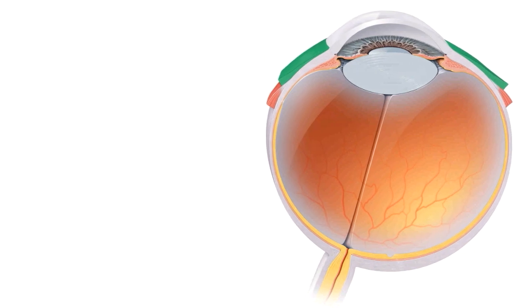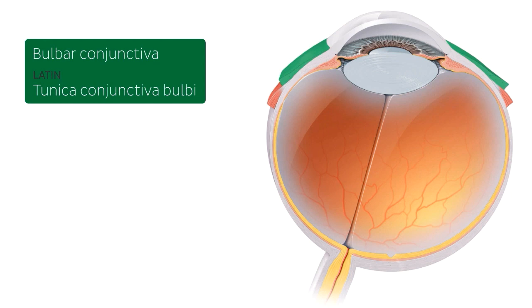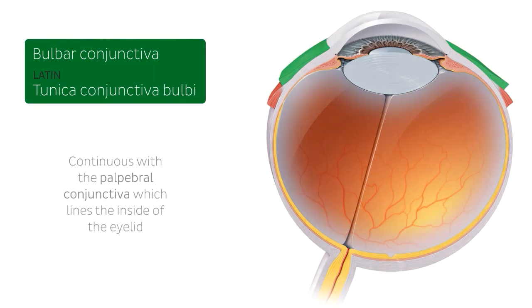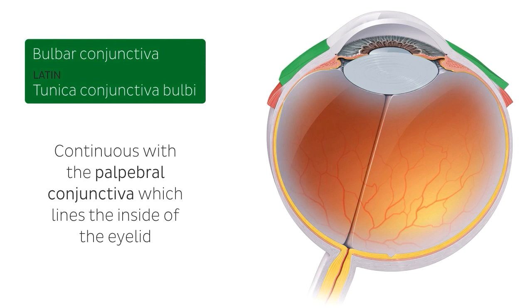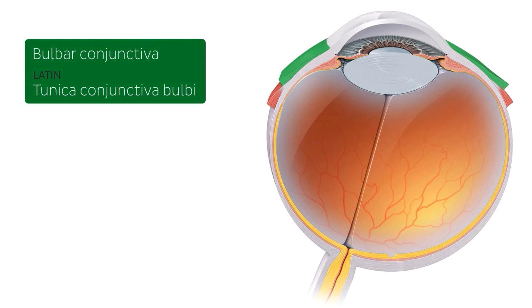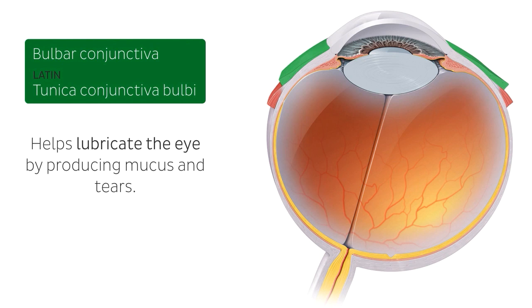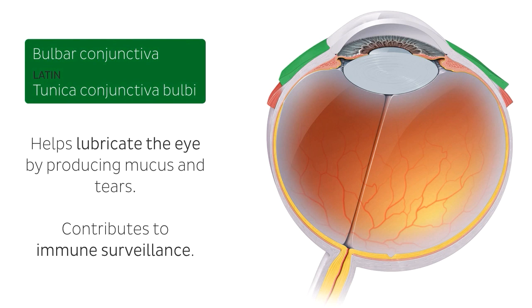On the following slides we're going to be focusing on the tunics of the eye, describing them from the outside to the inside. Starting with the one highlighted in green — this is known as the bulbar conjunctiva. This is the most external tunic, and it is continuous with the palpable conjunctiva which lines the inside of the eyelid. The bulbar conjunctiva helps lubricate the eye by producing mucus and tears, though it produces a smaller amount of tears than the lacrimal gland. It also contributes to immune surveillance and helps prevent the entrance of microbes into the eye.